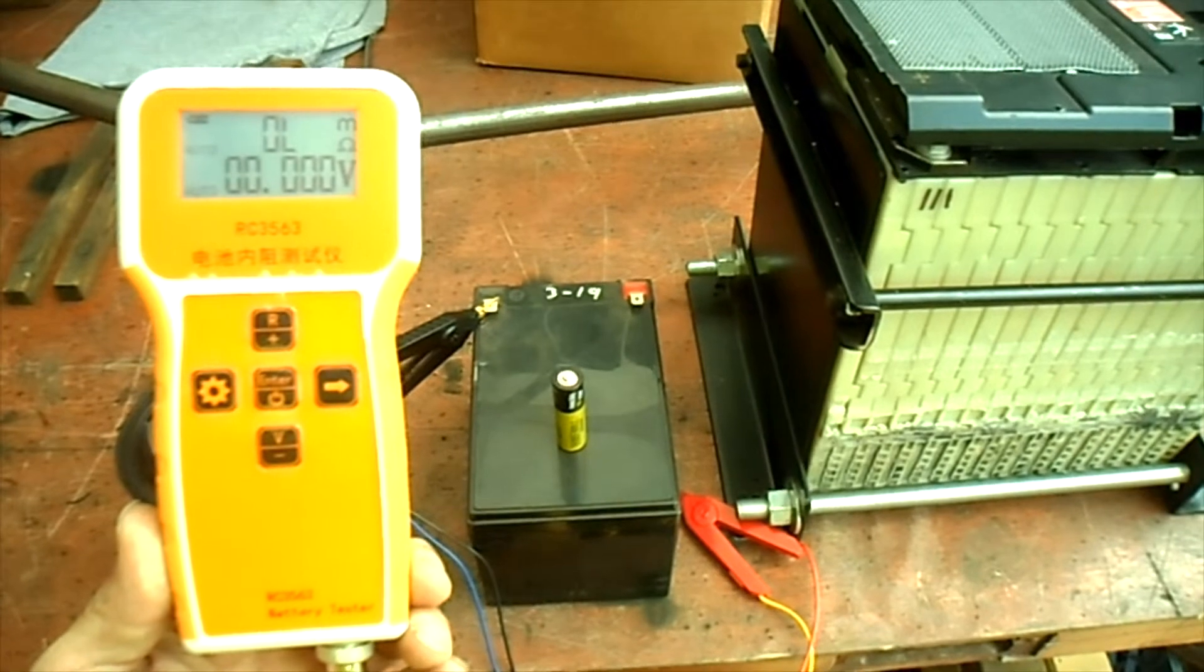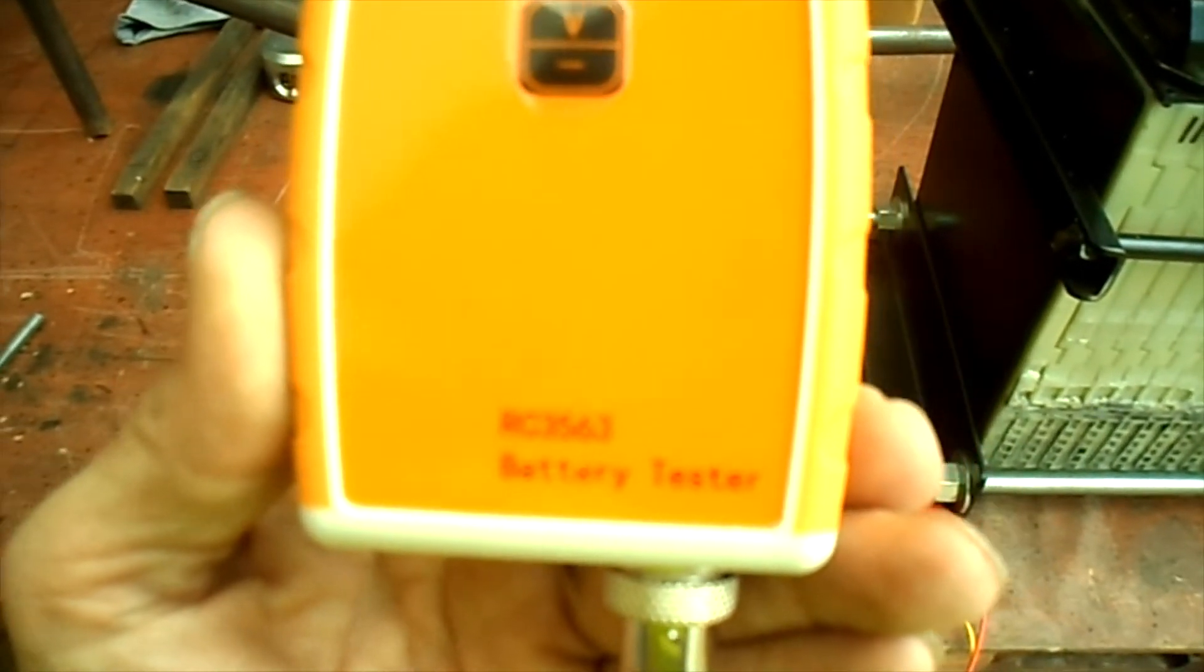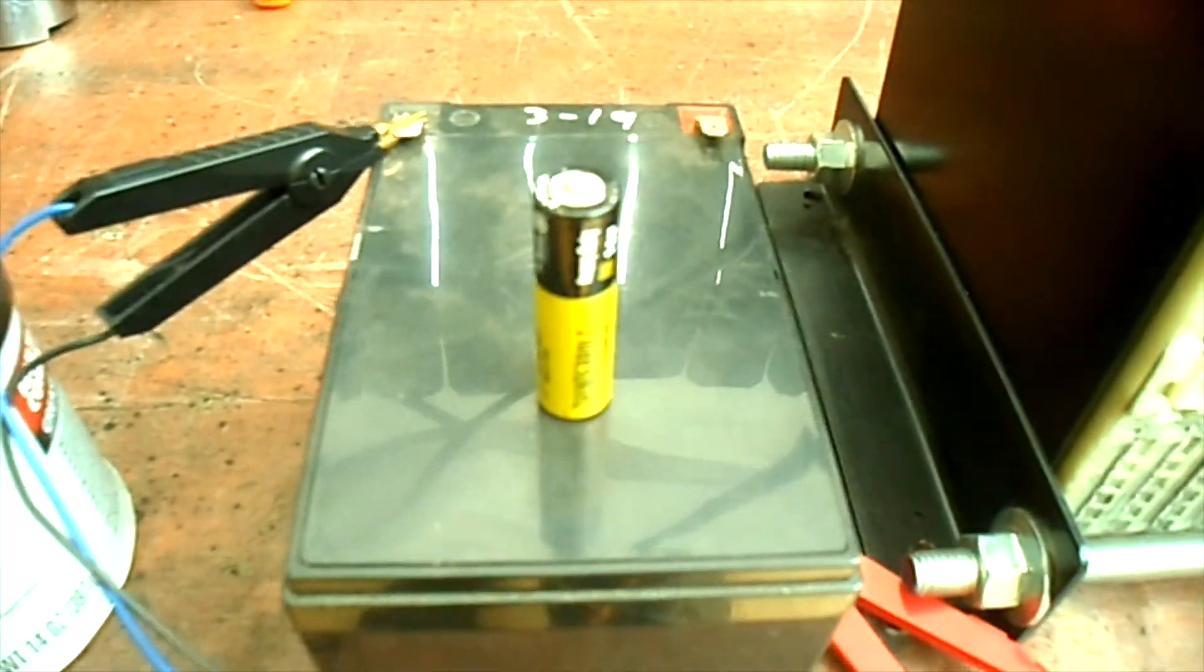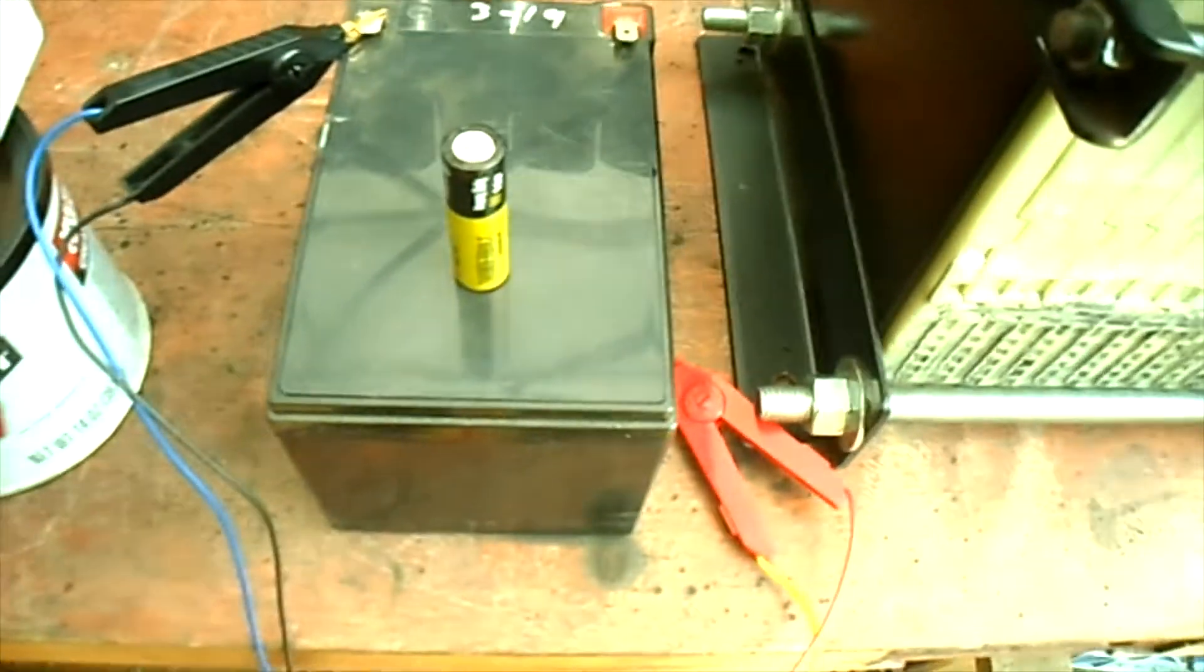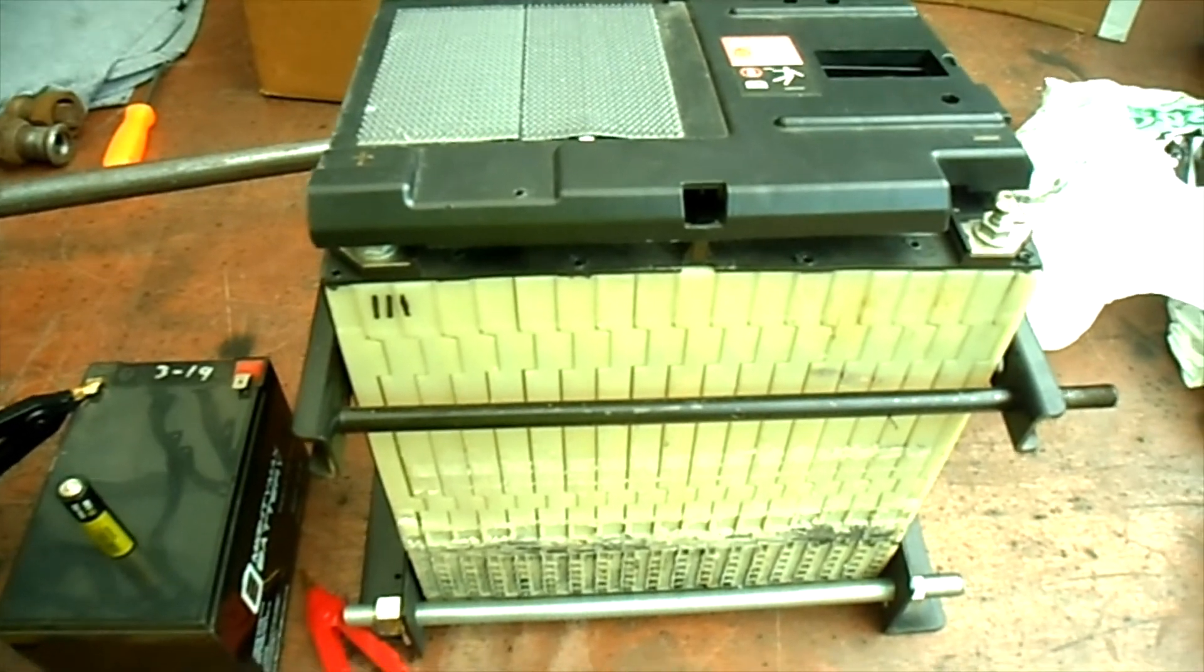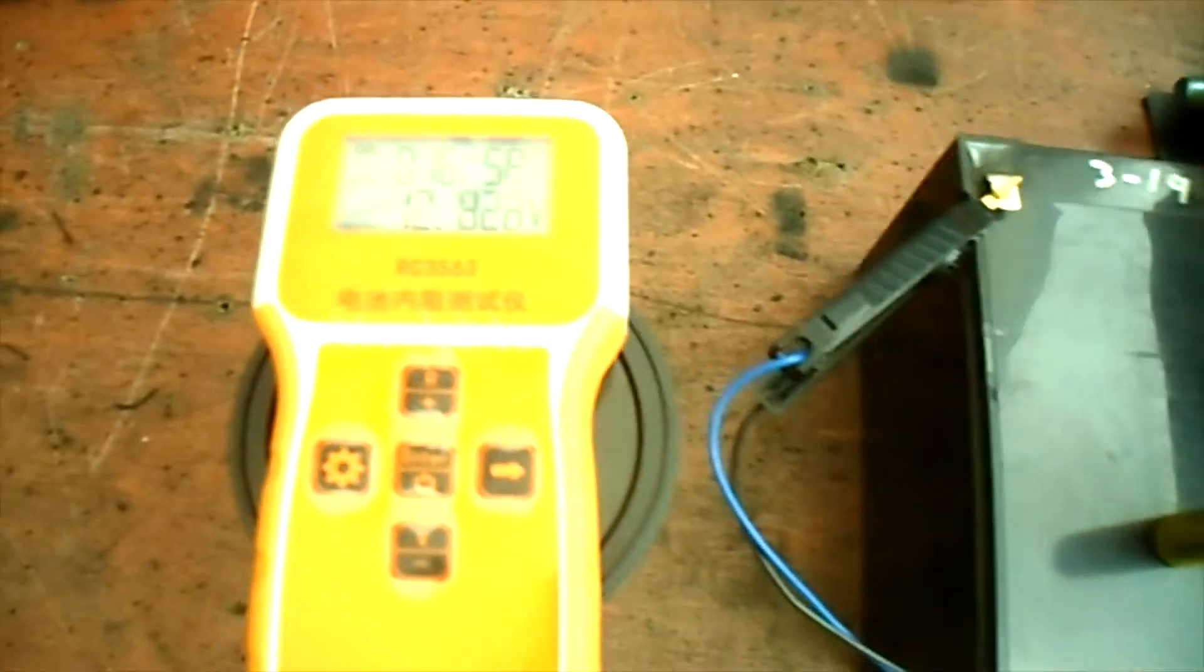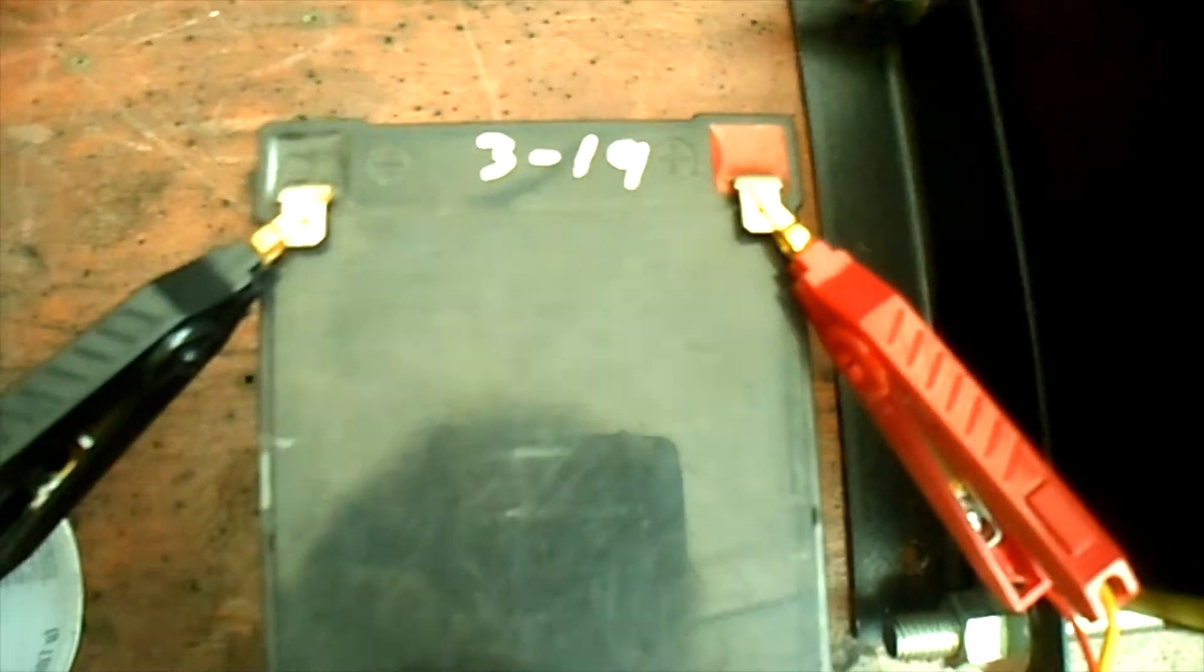Still testing around with our RC3563 battery tester. I've tried it on the AA battery, 12-volt SLA battery, and also our 48-volt 50 amp-hour lithium battery, and keep getting inconsistent readings. I have it hooked up to our 12-volt SLA.